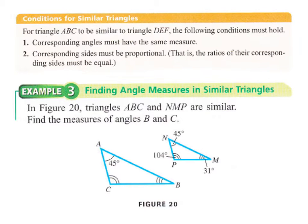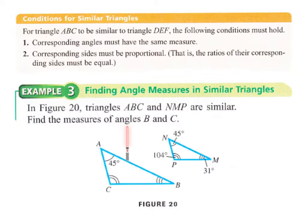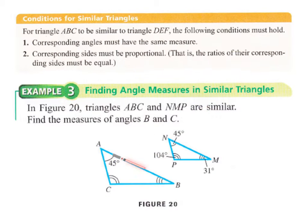Now, similar triangles. For triangles to be similar, corresponding angles must have the same measure and corresponding sides must be proportional. In this example, triangles ABC and MP are similar. P corresponds to C and M corresponds to B. Since the triangles are similar, the measure of angle B is 31 degrees and the measure of angle C is 104 degrees — corresponding angles have the same measure.